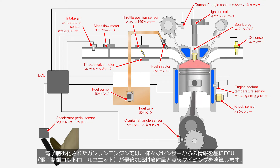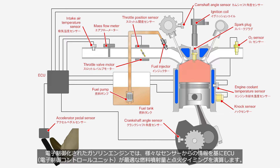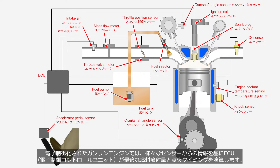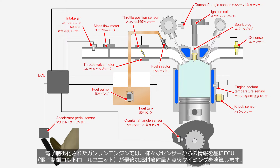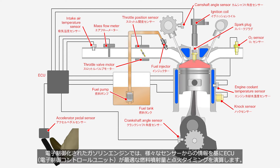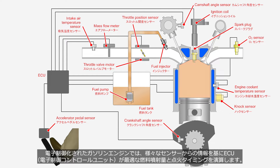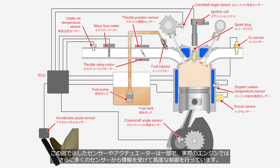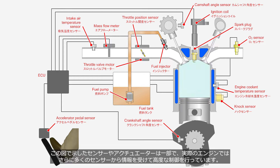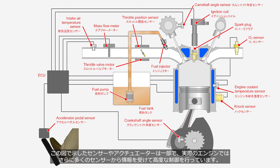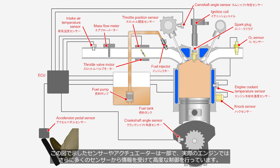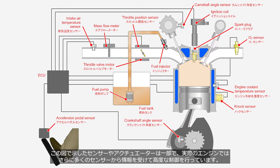In electronically controlled gasoline engines, the ECU — Electronic Control Unit — calculates the optimal fuel injection quantity and ignition timing based on information from various sensors. The sensors and actuators shown in this diagram are just a few; in actual engines, a more extensive array of sensors contribute information for advanced control.